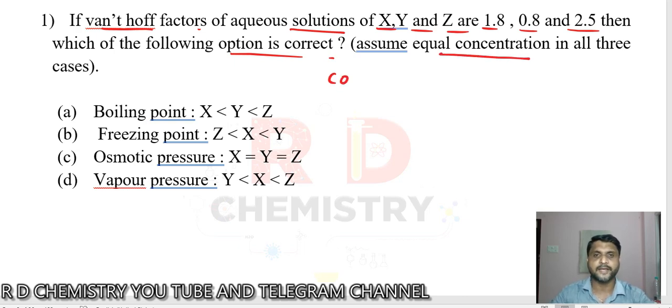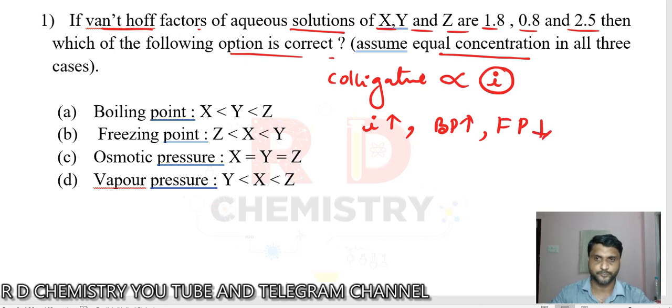Any colligative property is directly proportional to the number of particles produced in the solution in terms of i value, the van't Hoff factor. As the i value increases, boiling point increases but freezing point decreases. Osmotic pressure also increases whereas vapor pressure decreases.